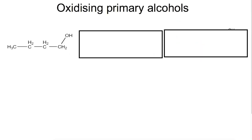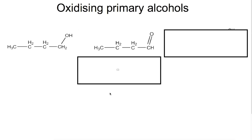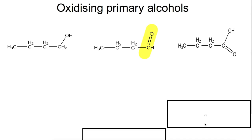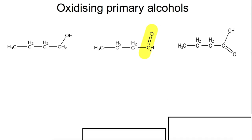We're looking at oxidising primary alcohols. So here we have our butan-1-ol. The first thing that would form is this molecule here, where you can see that our OH group has changed and we've now got the C double bond O. This is what we call the carbonyl group. So we've lost one of the hydrogens attached to the carbon and we've also lost this hydrogen. You can take this one slightly further because we still have a hydrogen attached, into which we can insert an oxygen, and that would take us all the way to our carboxyl group.